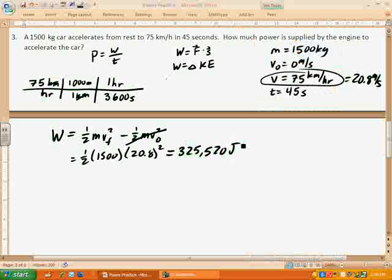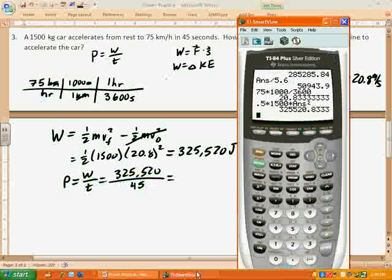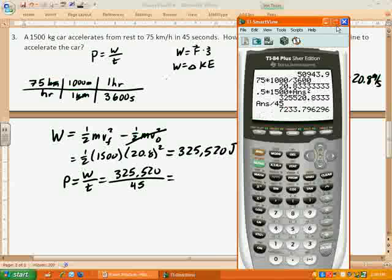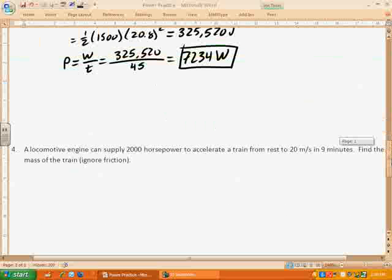And so now to get power, of course I'm going to do power equals work over time, which will be 325,520 divided by 45 seconds. So take that, divide it by 45, and we get 7234 watts. There you go, that's number 3. Let's go on to number 4, this is getting easy breezy, huh?